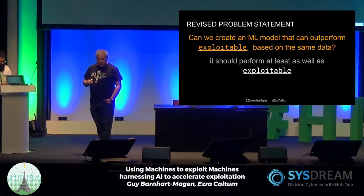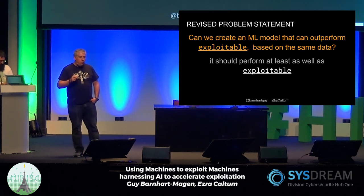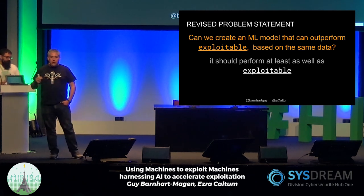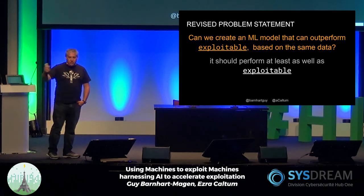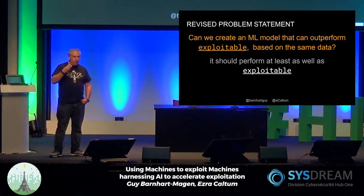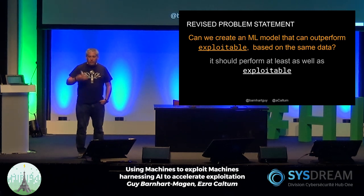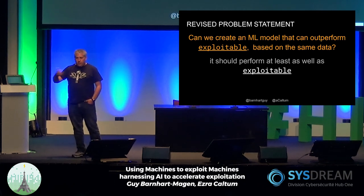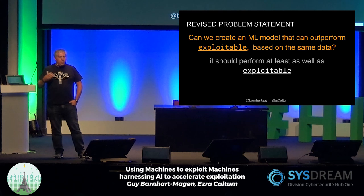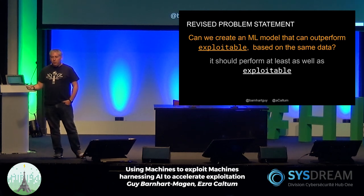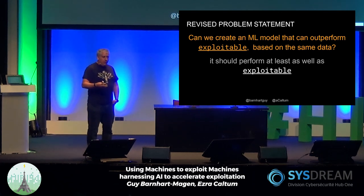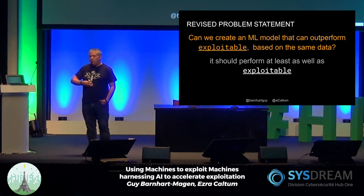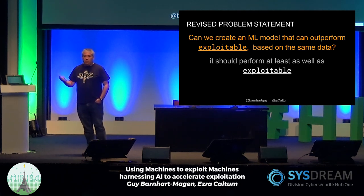What we wanted to achieve was to create a machine learning model that would take what we were doing by hand — running a tool called Exploitable — and automate it. Every time I say Exploitable underlined, I mean the tool, not the adjective. We were using this tool against our inputs to discern if a crash is exploitable or not. If we could create a model that can outperform Exploitable — working faster, finding more cases, or being more flexible — we could move through orders of magnitude more crashes.